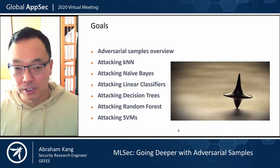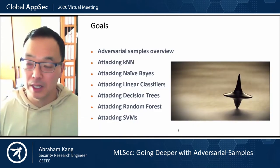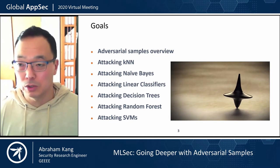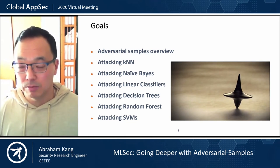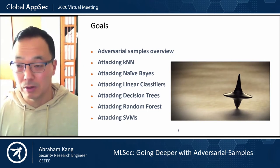So this is what we're going to cover today. A lot of people have been talking about adversarial samples in relation to deep learning. Today we're going to actually show you that it's a lot more broad than deep learning — it actually affects almost every single model out there, if not all of them.